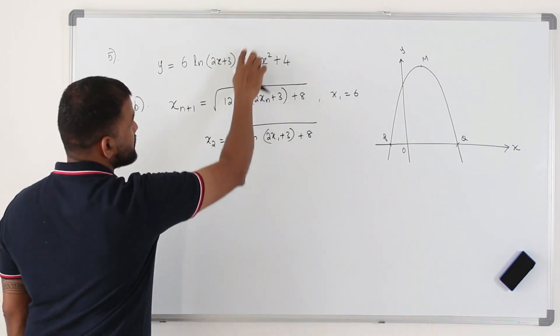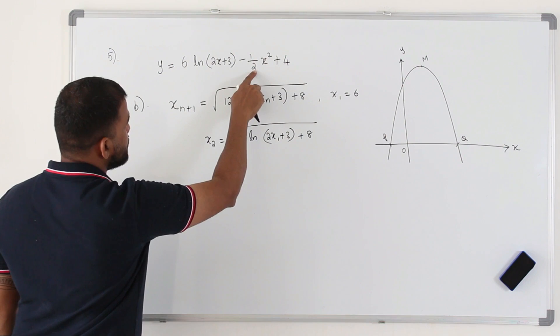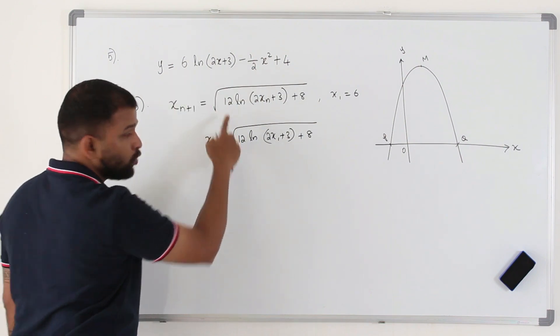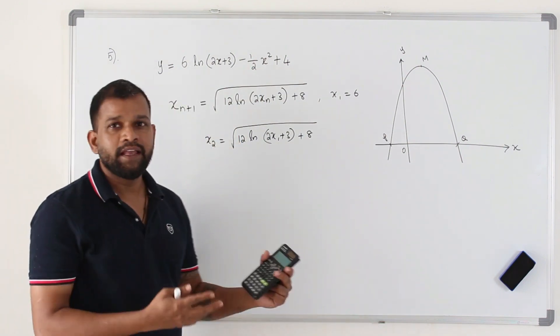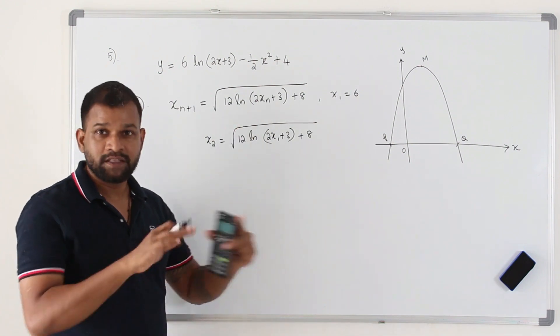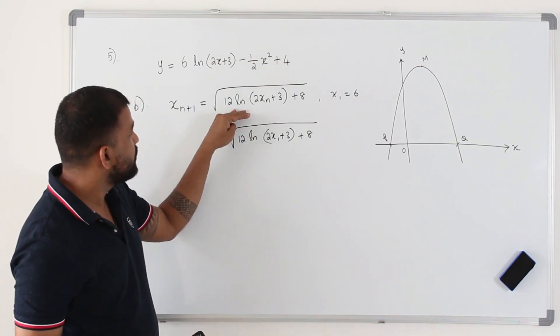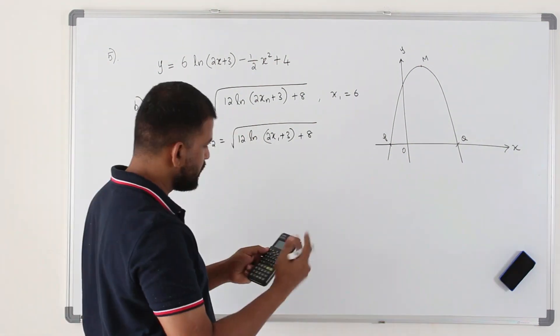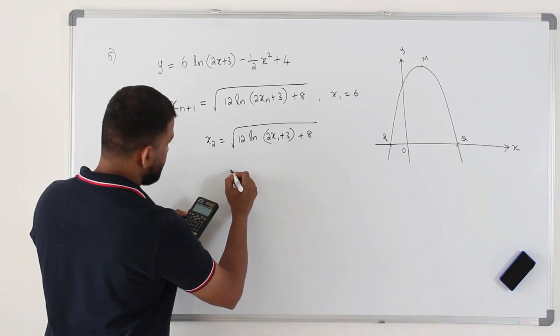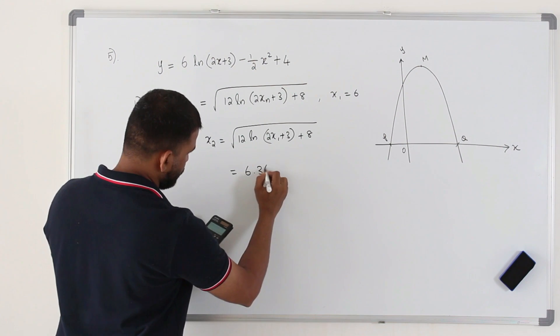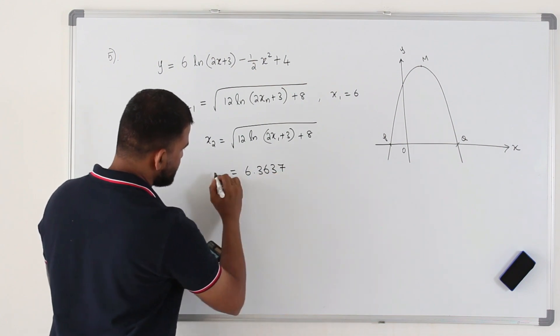So you need to find out which x is the subject here so that you get this iterative formula. You have to make this x as a subject. That's the reason you are multiplying everything by 2. It becomes 12. Anyway, here they don't want you to frame the iterative formula. That's given there already. You can use this iterative formula to find x2. They want the answer to 4 decimal places. So it's going to be 6.3637. That's x2.